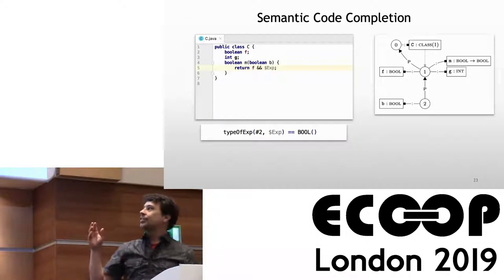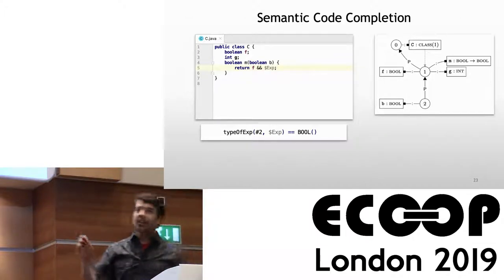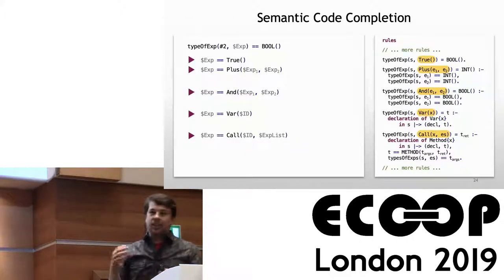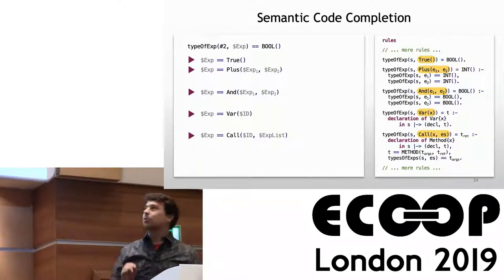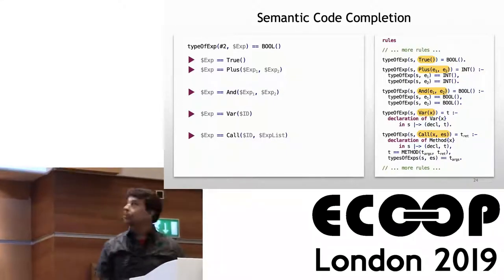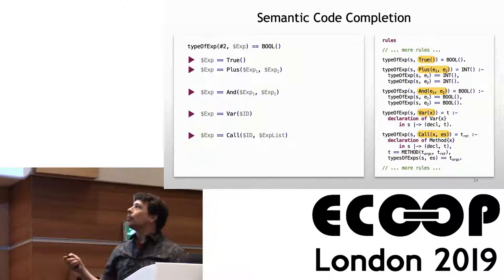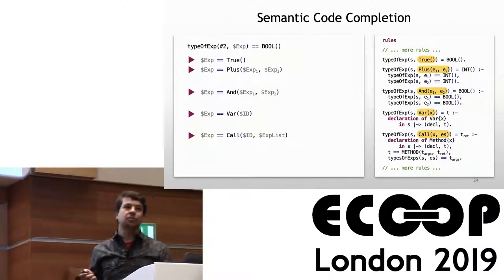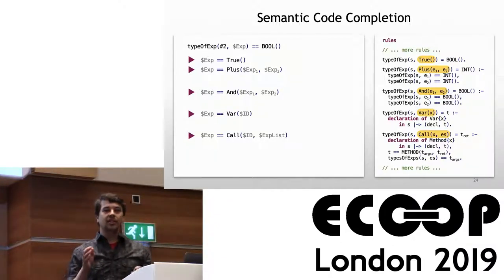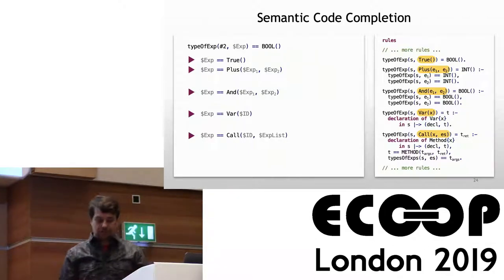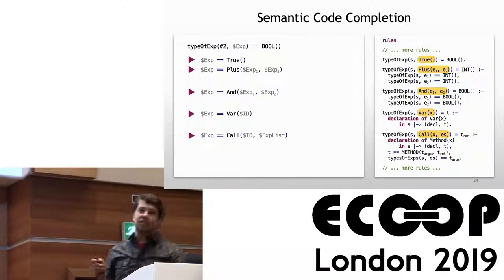The normal analysis would say this placeholder expression has type boolean. Now we ask: for semantic code completion, what are all the values you could put at this spot? Given the rules, we could try true, plus, a variable reference, or a method call. The first thing we need the solver to do is return multiple results — not just whether the program conforms to the semantics. Let's try each option and see the challenges.